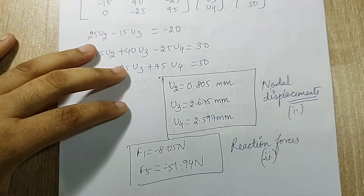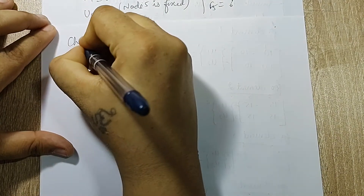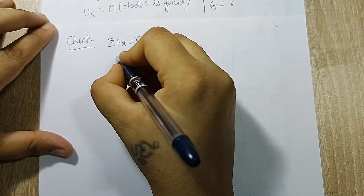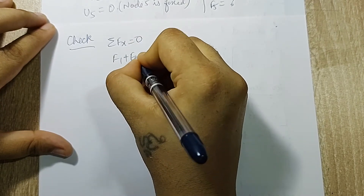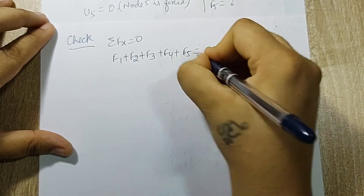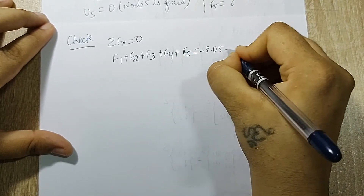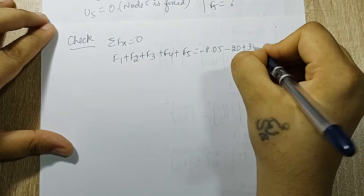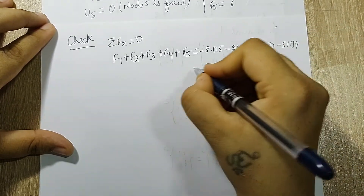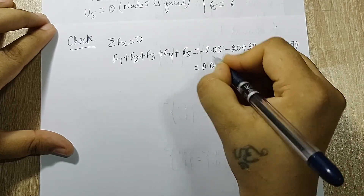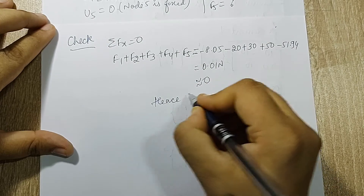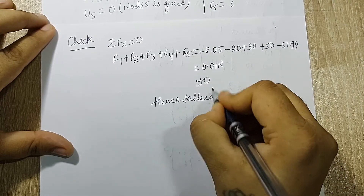For the check step, the summation of forces in the X direction should equal zero. Summing F1 + F2 + F3 + F4 + F5 gives approximately 0.01 N, which is essentially zero. The solution is tallied and the answers are confirmed correct.